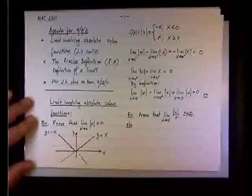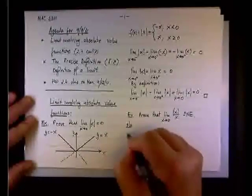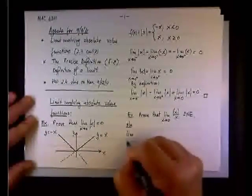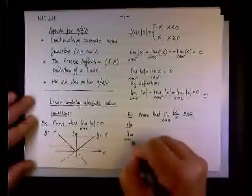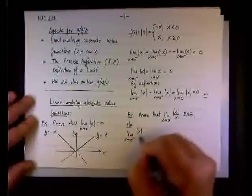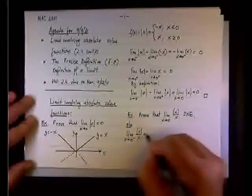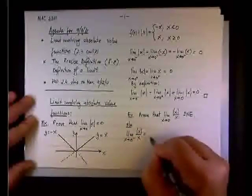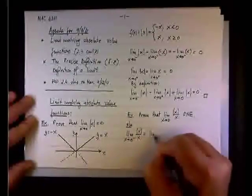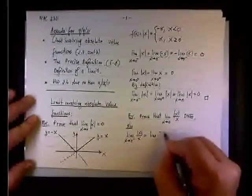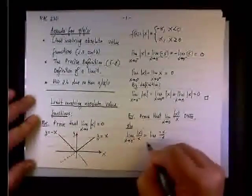We're going to check on the left side when we approach zero from the negative side. Then the absolute value of x over x will be negative x over x.